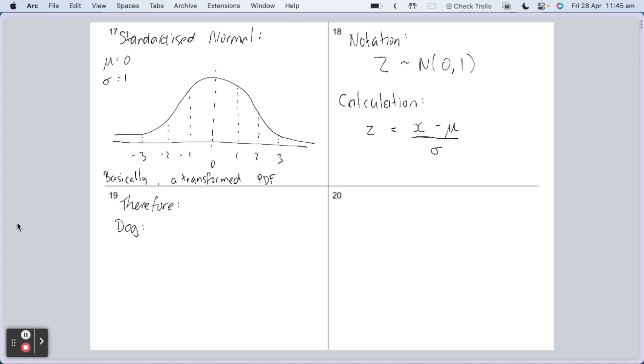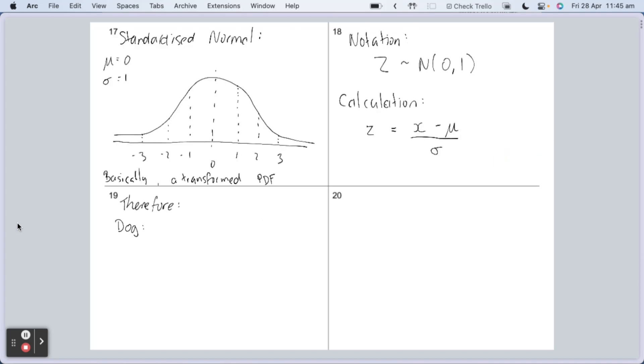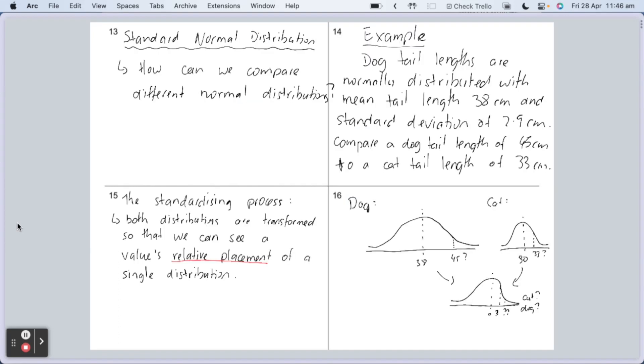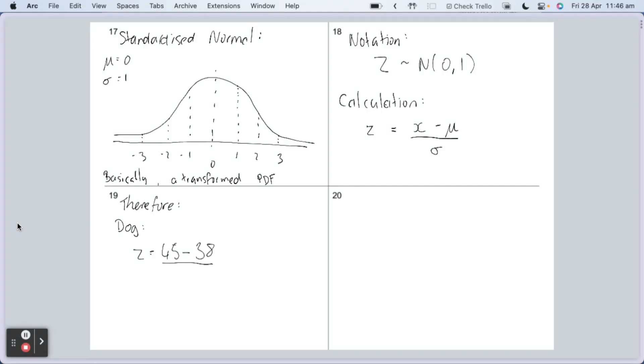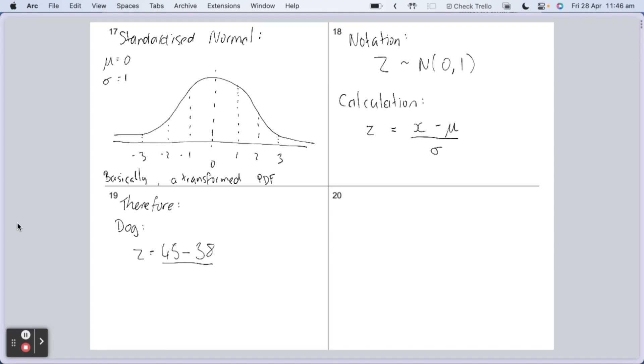So what we do is we are finding the z-value. The z-value is the relative placement. So for the dog, we say, what's the z-value for the dog? The dog's placement in its distribution curve was 45. The dog had a tail length of 45 centimeters. The relative place on the standard normal distribution is given by substituting values into the formula. So z is what we're trying to find out. We know what x is. z equals 45 minus mu. So mu is the mean of the dog distribution, and that was 38. So it's 45 minus 38 all over the standard deviation, which is 2.9. So it's 45 minus 38 all over 2.9. And that, my friends, is just a calculator operation away.